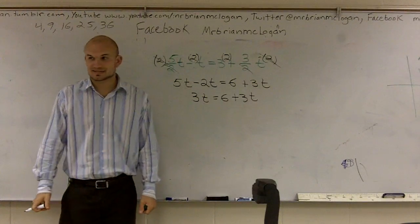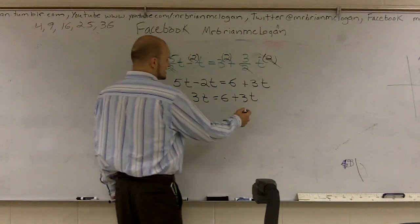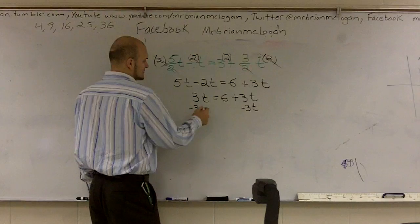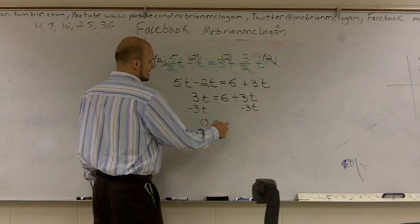Now I need to get to my last t. So I need to subtract a t on both sides. So I subtract a t here. And I subtract 3t over here. And what I get is 0 equals 6.